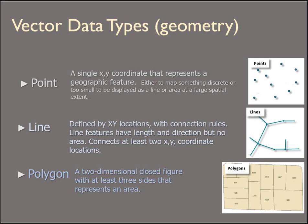Polygons are a two-dimensional closed area, still defined by the vertices — the x-y coordinate locations — and they obviously do have area.